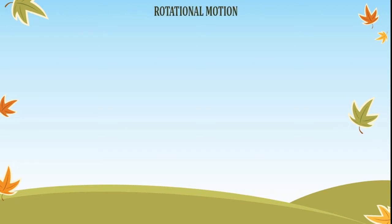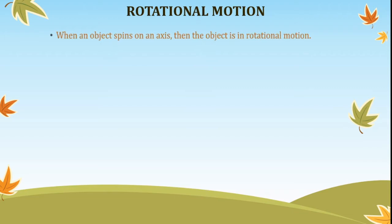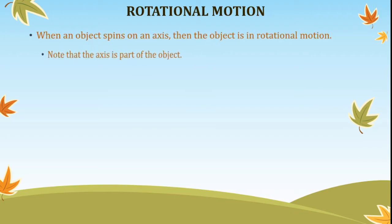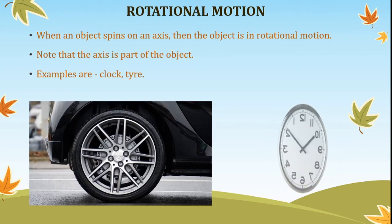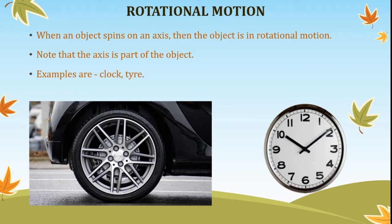Rotational motion. When an object spins on its axis, then the object is in rotational motion. The axis is a part of the object. Clock and spinning wheels are best examples of rotational motion.